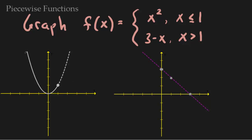I darkened in the side that I want and left the dotted side for the area I don't want. Now I'll go ahead and erase the part I don't want.